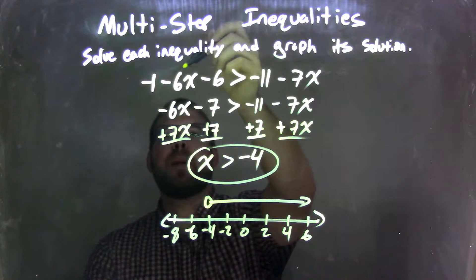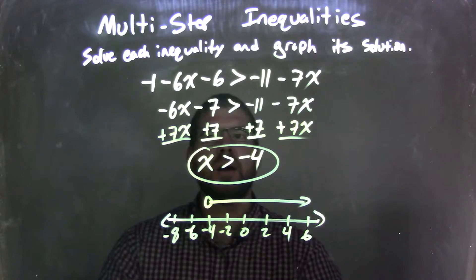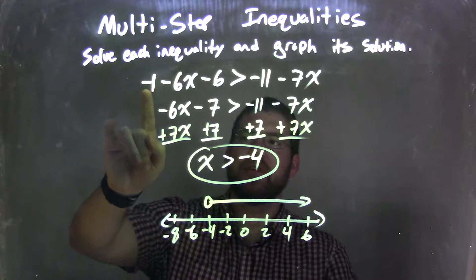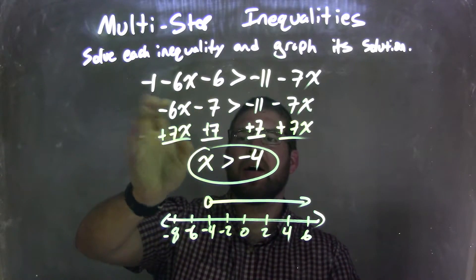So let's recap. We have negative 1 minus 6x minus 6 is greater than negative 11 minus 7x. I then needed to combine my terms here. So I combined the numbers, negative 1 minus 6 came out to be negative 7.